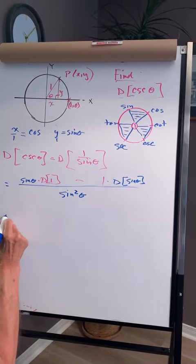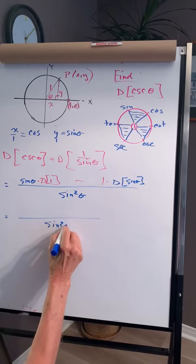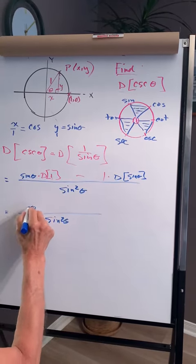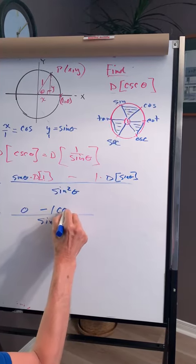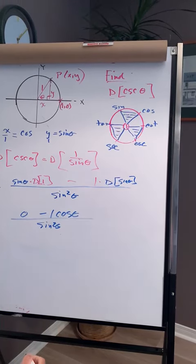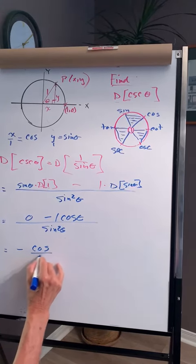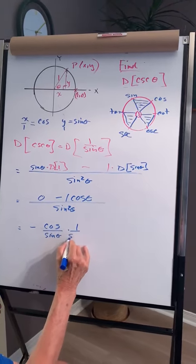From here, sine squared theta in the denominator. The derivative of 1 is 0, and the derivative of sine is cos. So I end up with minus cos over sine times 1 over sine.